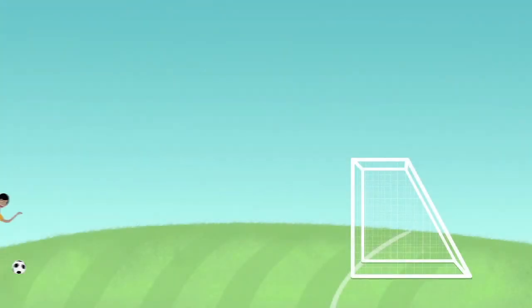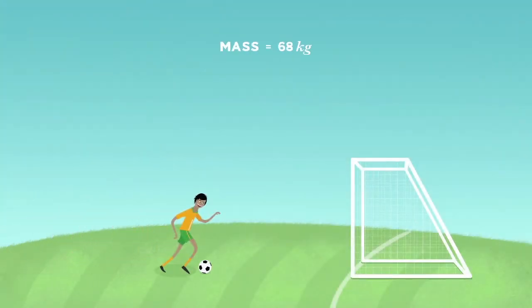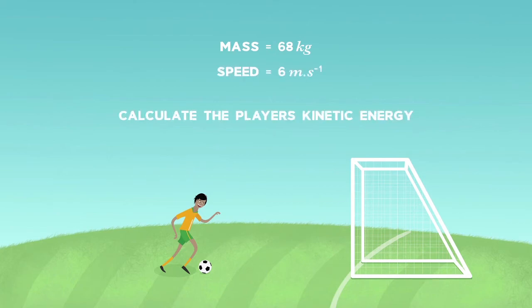A soccer player has a mass of 68 kilograms and dribbles the ball at 6 meters per second towards the goal. Calculate the player's kinetic energy.